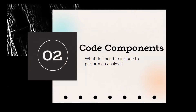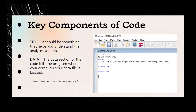What do you need to run code in Mplus? There are several key components. The first two are the title and the data. The title is not strictly necessary, but it can be helpful when you look at the code later to understand what analysis you ran. The data command, however, is required — it tells Mplus where the data file is located on your computer. These commands are not case sensitive, so they can be in upper or lower case. All statements end in a semicolon, which tells Mplus you are done with the current command.